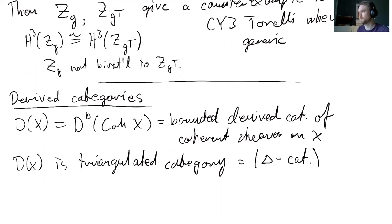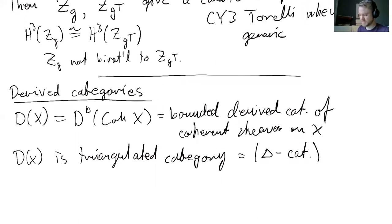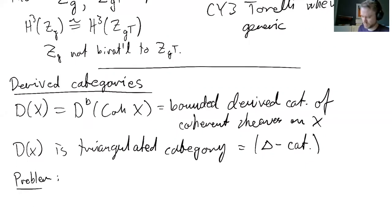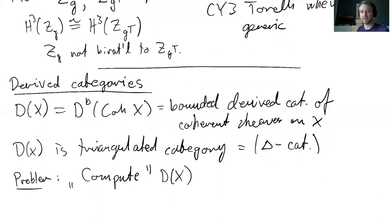This derived category was initially designed to understand and work with homological algebra and coherent sheaves on X. In a later historical development it turned out to be a very useful invariant: as a triangulated category it becomes an interesting invariant of the variety X. There is a general problem one can loosely describe as computing this category as a triangulated category. The category has an infinite amount of data, and there's little hope of describing it by generators and relations.